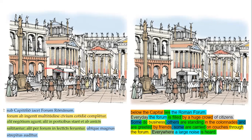We can see right here — this is what a lectica is. 'Ubique magnus strepitus auditur' — everywhere, from all sides, a large clamor — 'strepitus,' which is actually fourth declension, though you can't tell it from here; you'll see that confirmed later in another translation — 'auditur,' is heard. Passive verb. Let's keep going.